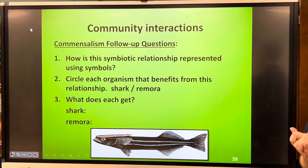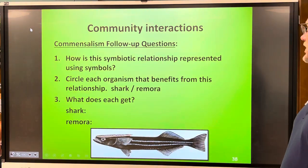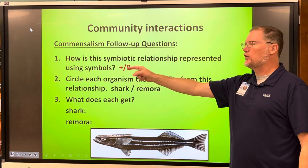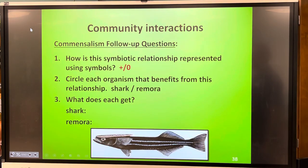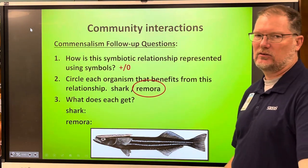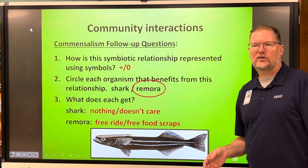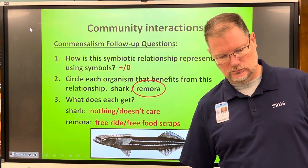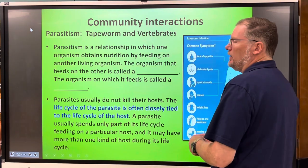Follow-up questions for commensalism: how is this represented with symbols? Plus and zero — one is gaining something and the other is neither gaining nor losing anything. Circle each organism that benefits — it's only the remora. What does the shark get? Nothing. What does the remora get? Everything — a free ride so it doesn't have to expend energy, and free food.